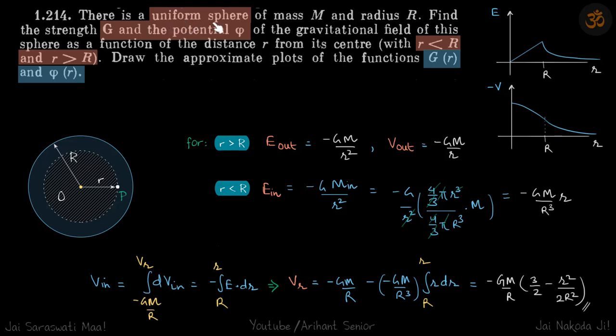We have a uniform sphere and we need to find the field and potential inside and outside that sphere, and we also need to find the plots. So we know for the distance r greater than the radius of the uniform sphere...